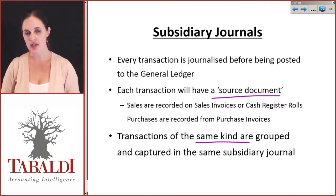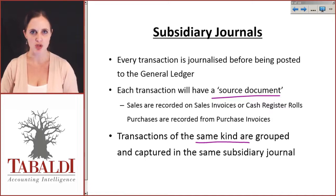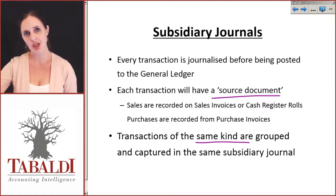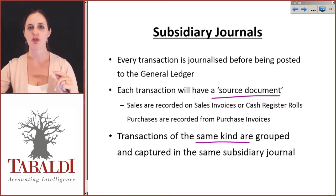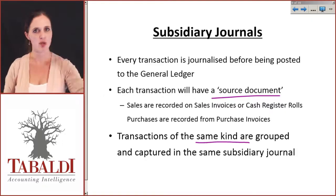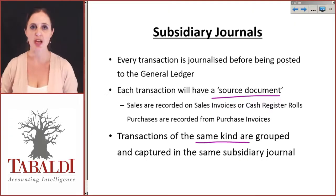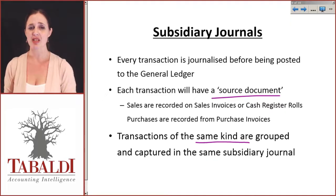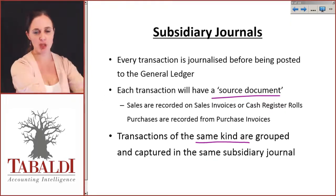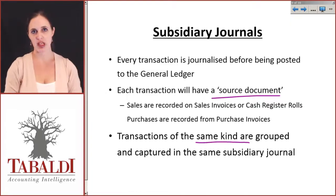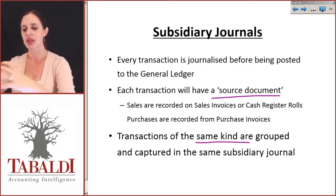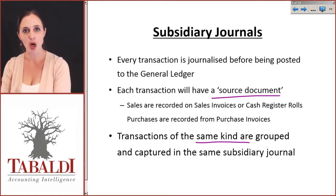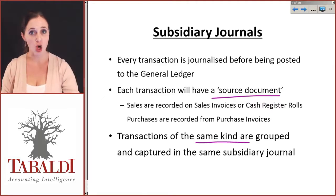This grouping also helps in companies where there are far too many transactions for one person to handle. If you have a sales department and a purchasing department, they'd be fighting over access to one general ledger. The wages department also needs to record in it — it would be a mess. So instead, we give each department their own specific journal to record everything in. Then once a month, we post all the totals to the general ledger rather than every single item individually.